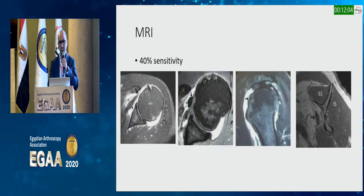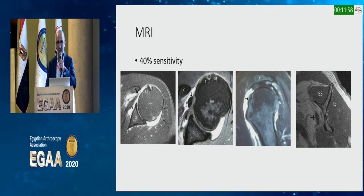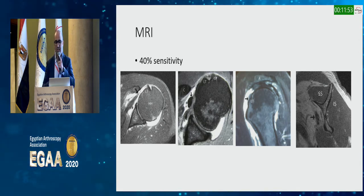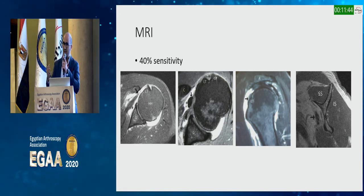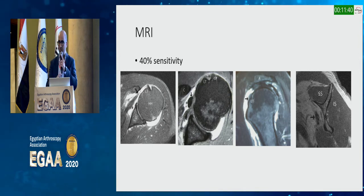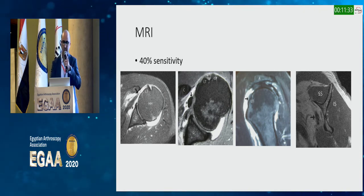Another test I always use is the bear hug test; I find it very sensitive in diagnosing upper border tears. Regarding MRI: if you're waiting for the MRI report to diagnose a subscap tear, you're probably going to miss it. MRI is not sensitive in detecting subscap tears. Very seldom will you find a retracted tendon, dislocated biceps, bare lesser tuberosity, or fatty infiltration of the muscle belly.